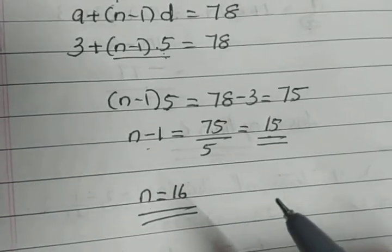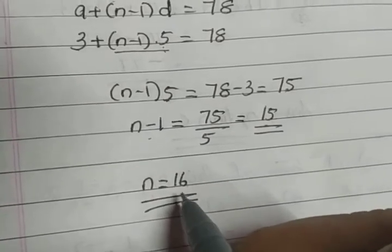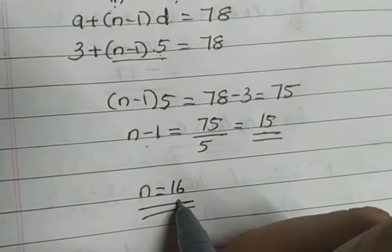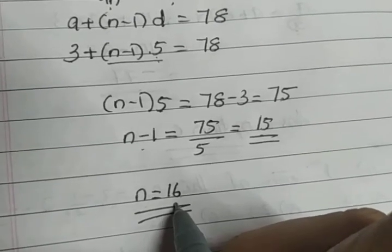I told in the beginning, though there are three unknowns a, d, and n, a and d can take any real values. The restriction is for n, and n can take only integers. So here we got n as 16, which is an integer, so the answer will be correct.